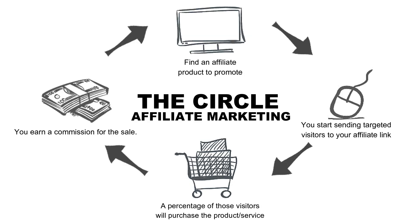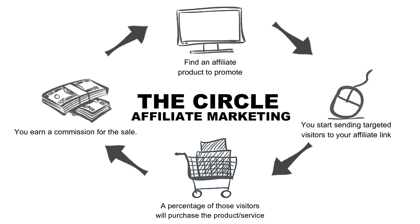Let me introduce you to the circle of affiliate marketing. First, you find an affiliate product to promote — in this course you'll learn the top affiliate networks and how to find a winning product. Then you start sending targeted visitors to that affiliate link using Facebook to send targeted traffic to people most likely to buy. A percentage of those visitors — usually two to five percent — will purchase the product, meaning you earn a commission. Then you repeat this process over and over again with multiple affiliate products, though sometimes one winning product can make you thousands of dollars.